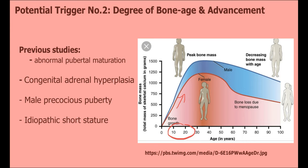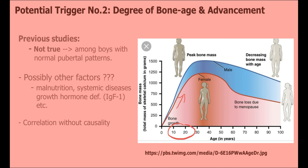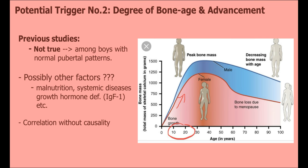Multiple conditions that delay skeletal growth — such as malnourishment, systemic diseases, constitutional delay, and growth hormone deficiencies — have also delayed puberty, whereas pathologies that expedite skeletal growth, such as steroid exposure, also expedite pubertal timing. The idea that skeletal maturation may dictate pubertal timing is a reasonable hypothesis. Previous studies observed a strong correlation between bone age and pubertal onset in boys with abnormal maturation, including those with congenital adrenal hyperplasia and familial male precocious puberty. Individuals with greater skeletal development began puberty earlier, while boys with idiopathic short stature and the highest degree of skeletal delay began puberty later.